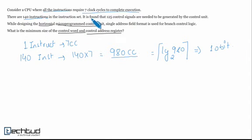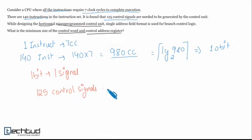Then comes, it is found that 125 control signals are needed to be generated by the control unit while designing the horizontal microprogrammed control unit. Since I have already told you, in horizontal microprogrammed control unit 1 bit is assigned to each signal. So for 125 control signals we need 125 bits.